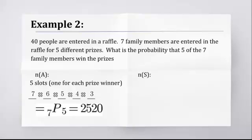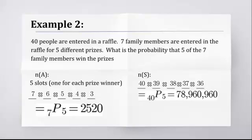N of S, you might want to look at this one first. So, after you watch the whole thing, you might want to understand N of S. There's still five slots, one for each prize, but there are 40 ways to do the first prize. 39 ways to give out the second prize, 38, 37, 36. So, we get a total of 40P5, which is a lot bigger. There's 78,960,960. That's total ways to give out the five prizes.